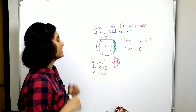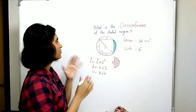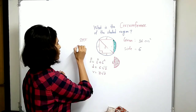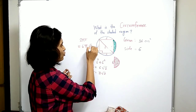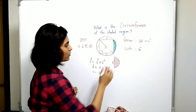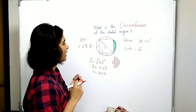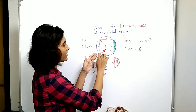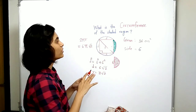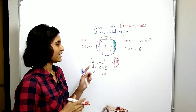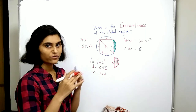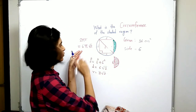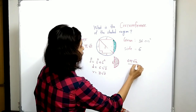Now the circumference of the circle is 2πr. Putting in the value of r, the circumference of this circle is 6π√2. Now to find the circumference of this arc, we divide this by 4. Why? Because the square inscribed in the circle creates four equal regions, so the length of this arc is just one fourth of the circumference of the circle — that means 6π√2 divided by 4.